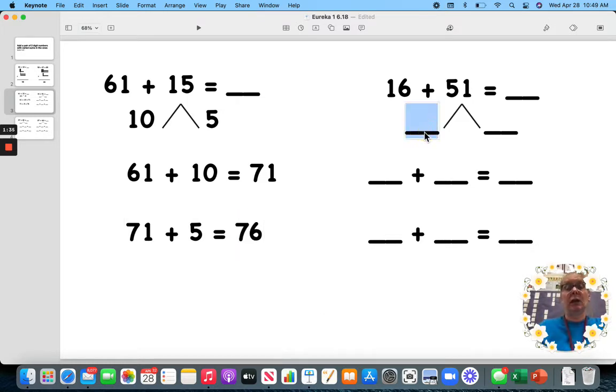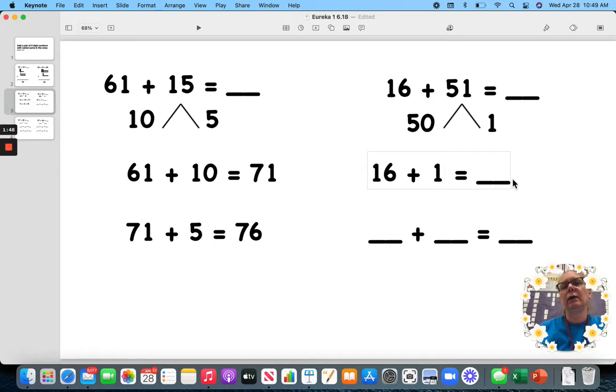Here, I'm going to reverse it. I have 50 and 1. So, let's do it the other way. Let's add 16 plus 1, because that's pretty easy. 16 plus 1 is just the next number, 17.